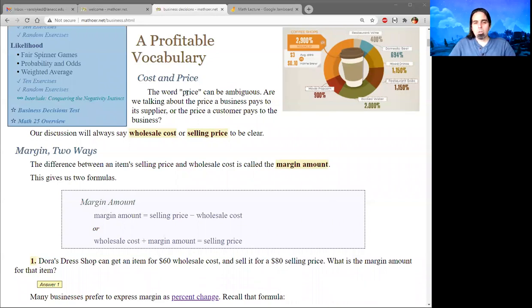The word price can be ambiguous. Are we talking about what the business pays to its supplier? Or what the customer pays to the business? This lecture will always use wholesale cost for what the business pays the supplier and selling price for what the customer pays the business.